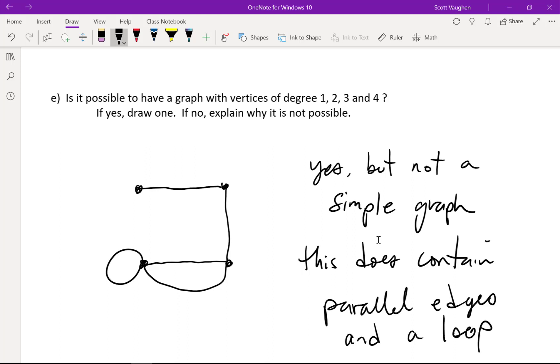So, yes, it is possible to have a graph that has degrees 1, 2, 3, and 4, but it wouldn't be possible to make a simple graph. And anytime you add in a loop, that will increase the degree by 2.